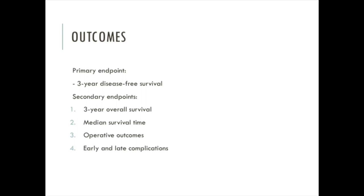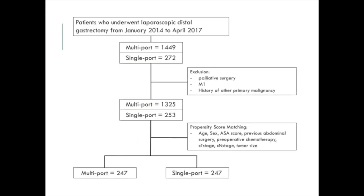The primary endpoint was 3-year disease-free survival. Secondary endpoints were 3-year overall survival, median survival time, operative outcomes, and early and late complications. After exclusion, 1,325 patients underwent multipore distal gastrectomy and 253 patients underwent single-pore distal gastrectomy. Patients were then matched using propensity score matching with variables including age, sex, ASA score, previous abdominal surgery history, preoperative chemotherapy, clinical T-stage, clinical N-stage, and tumor size. After 1-to-1 matching, 247 patients were enrolled in each group.